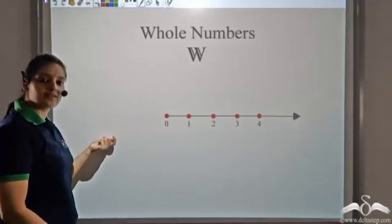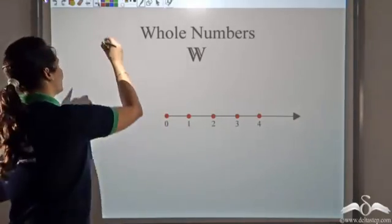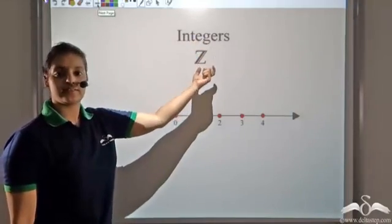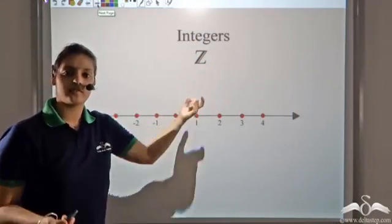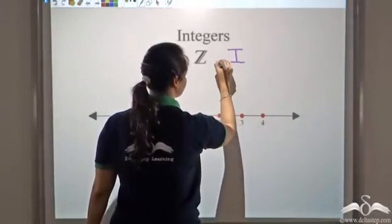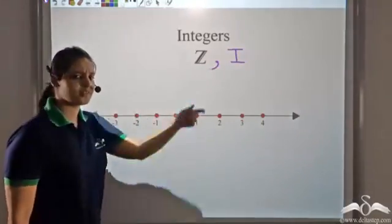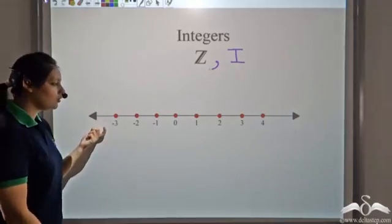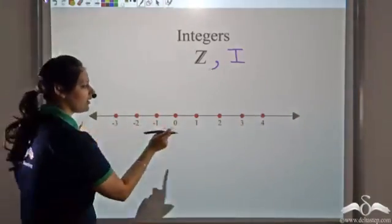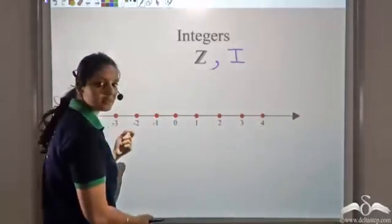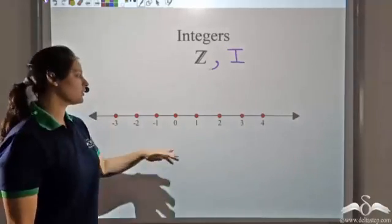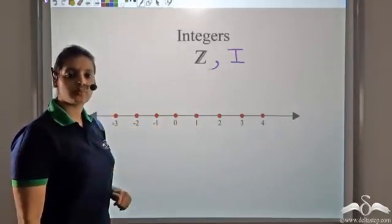If I include negative numbers to this collection, what I get is integers. Now integers are represented by the capital letter Z or you can represent it by I also. So Z or I both represent integers. Now to my whole numbers I added negative numbers, so I have now infinite numbers in both directions. Two arrows, infinite numbers in both directions. So this is how I can represent integers on a number line.